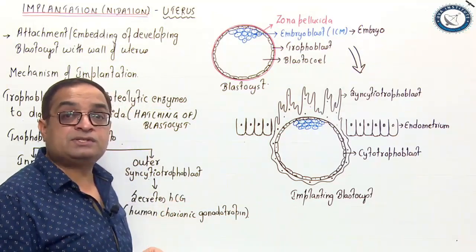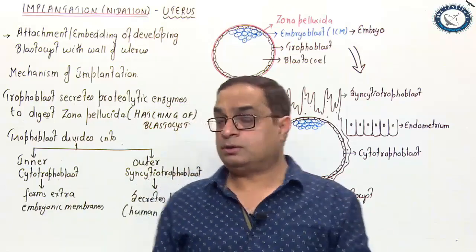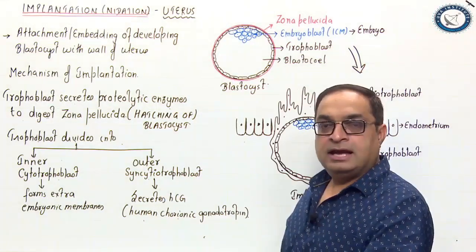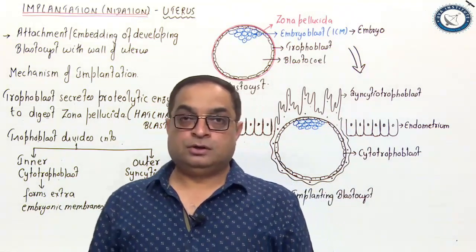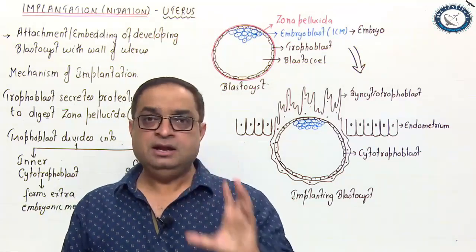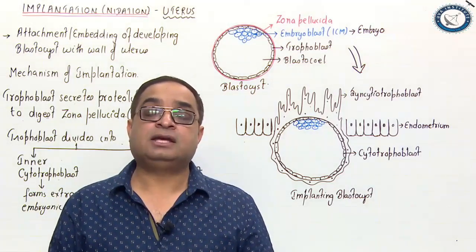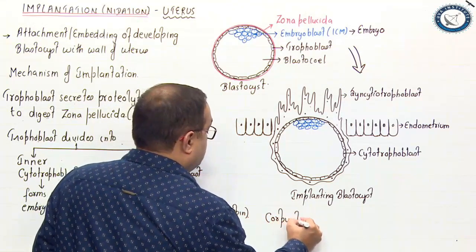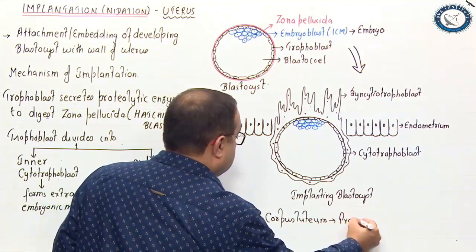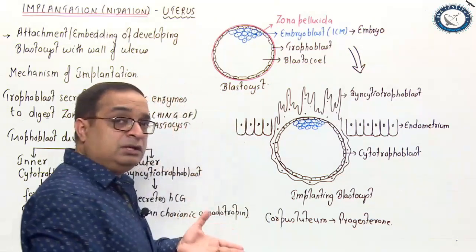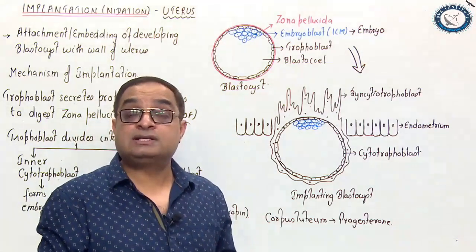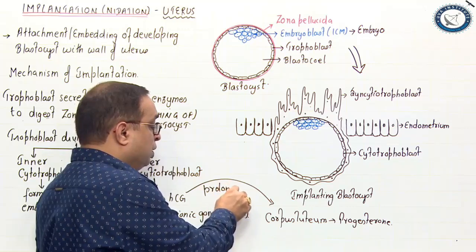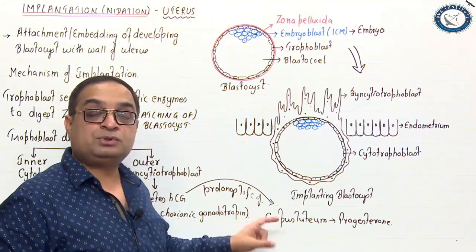Syncytiotrophoblast also secretes a glycoproteinaceous hormone: HCG, which stands for human chorionic gonadotropin. When this structure is implanting and attaching with the wall, HCG prolongs the life of the corpus luteum. When ovulation occurs, the Graafian follicle ruptures and the remaining cells form a temporary endocrine gland called corpus luteum. Corpus luteum secretes progesterone, which is a very important pregnancy-maintaining hormone. Since corpus luteum cannot keep secreting progesterone indefinitely and requires luteal support, the very important function of HCG is to prolong the life of corpus luteum so it continues producing progesterone.